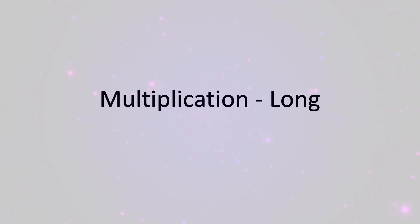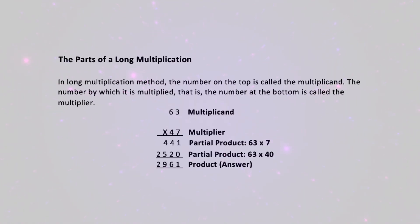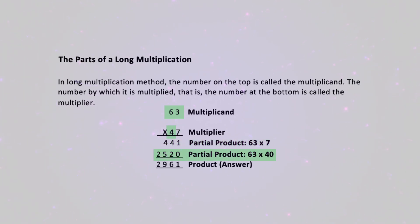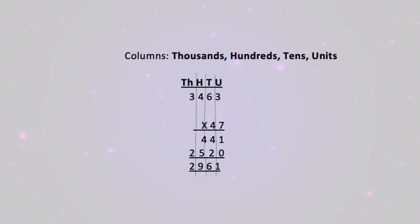Multiplication: the long method. In the long multiplication method, the number on top is called the multiplicand. The number by which it is multiplied — that is, the number at the bottom — is called the multiplier. We have the multiplicand, the multiplier, the partial product (in this case 63 times 7), the partial product number 2 (which is 63 times 40), and the final product or answer.